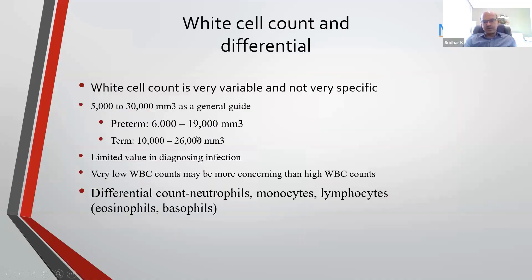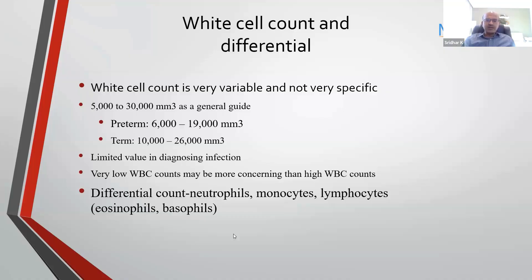On the first day, especially after normal delivery, the white cell count is frequently 26,000 to 27,000, and you don't treat on that basis alone. Very low counts can be seen in babies with neutropenia with severe IUGR and maternal PIH, and that has to be a factor to be considered as well.